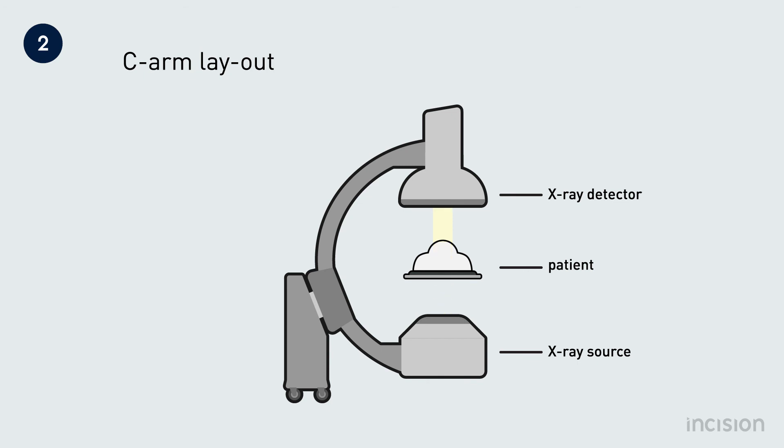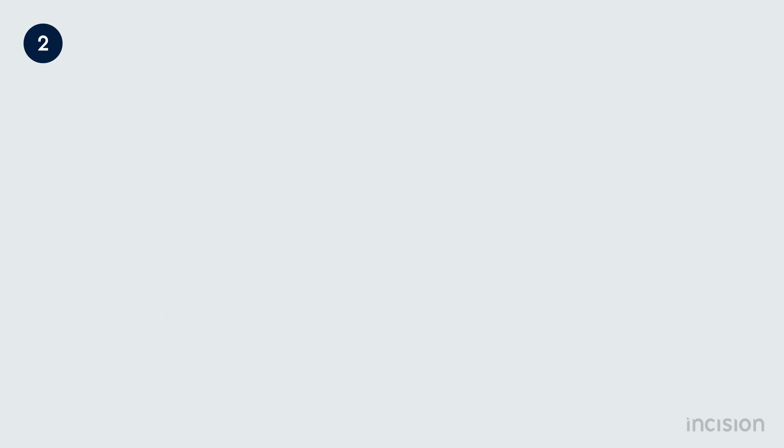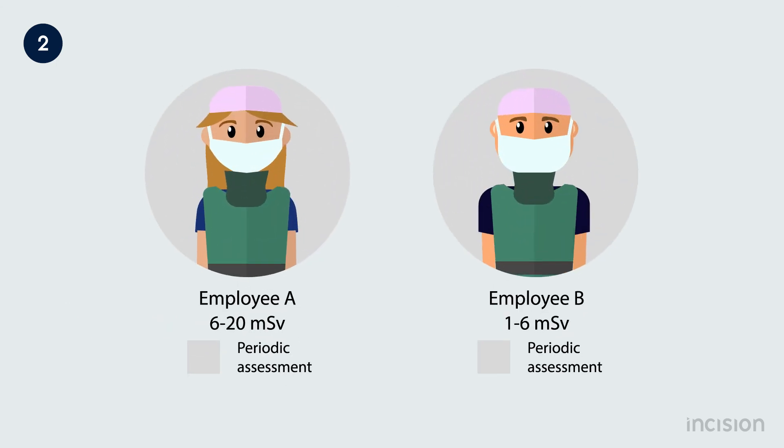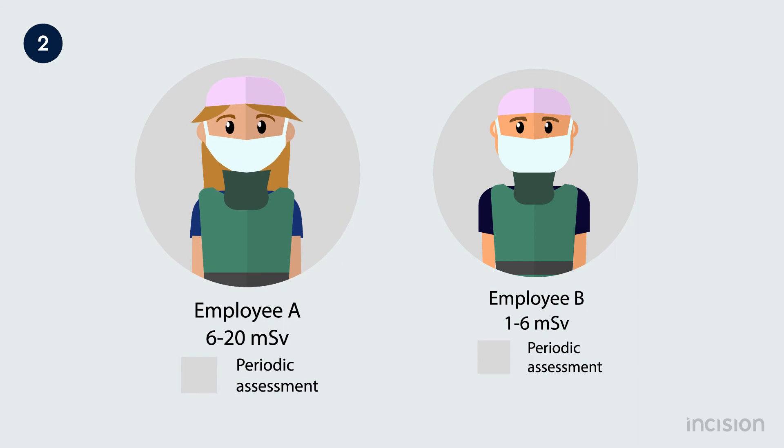C-arm operation is reserved for personnel who have received specific training and the appropriate certification. These are called radiological medical practitioners. Which healthcare professional is certified to operate the C-arm is dependent upon national laws and regulations. The person responsible for radiation hygiene in a hospital is called the clinical physicist. Exposed employees are classified into either category A or category B.